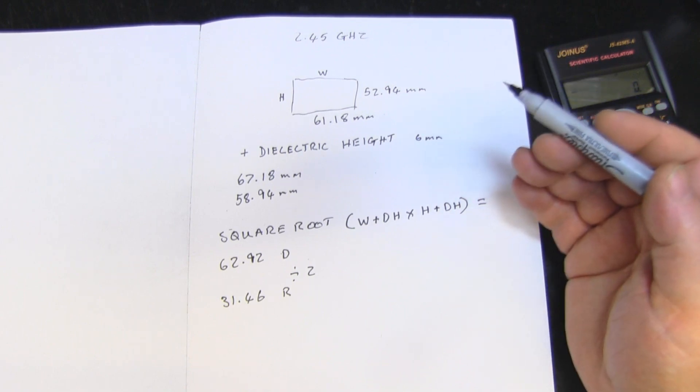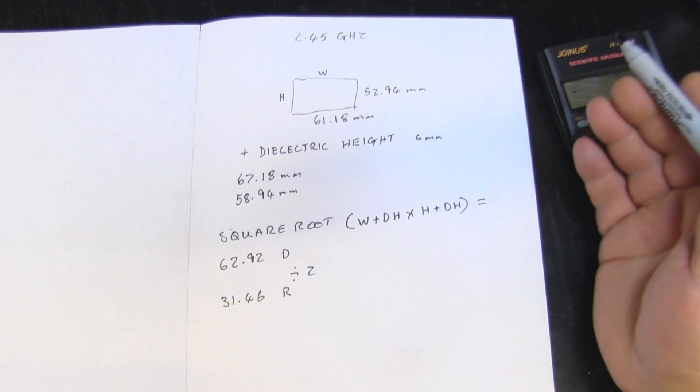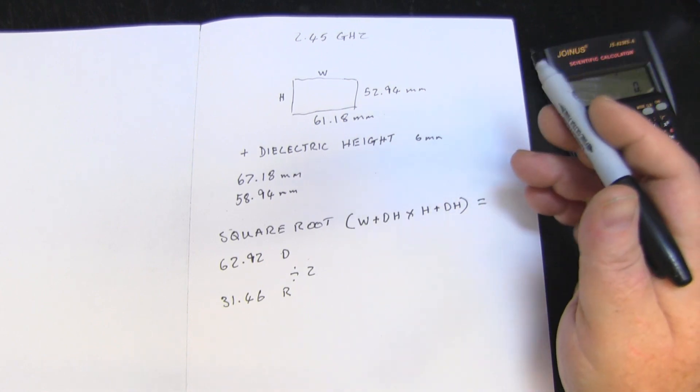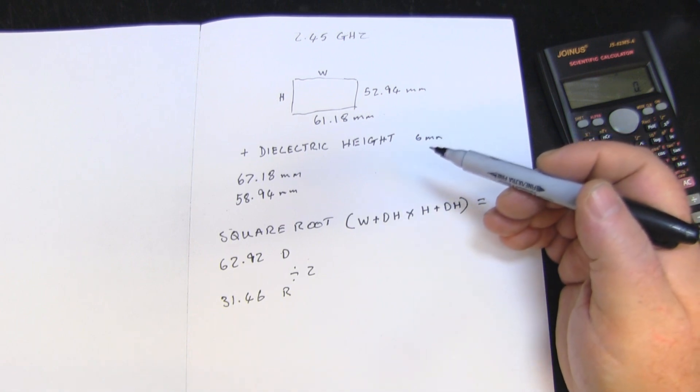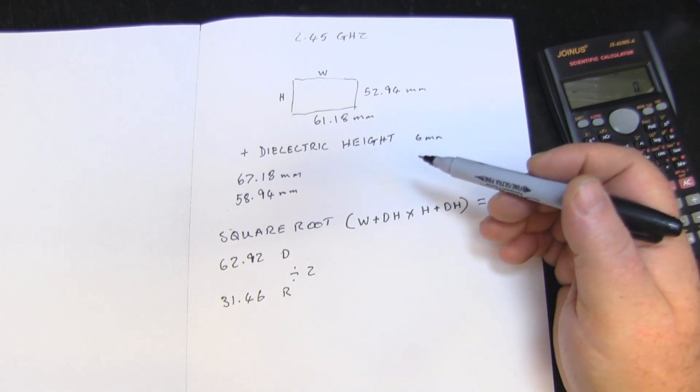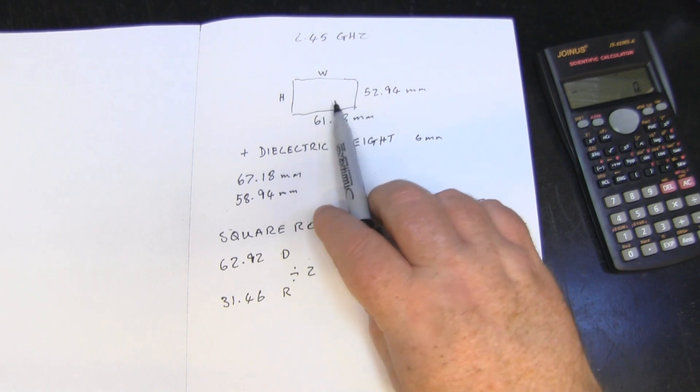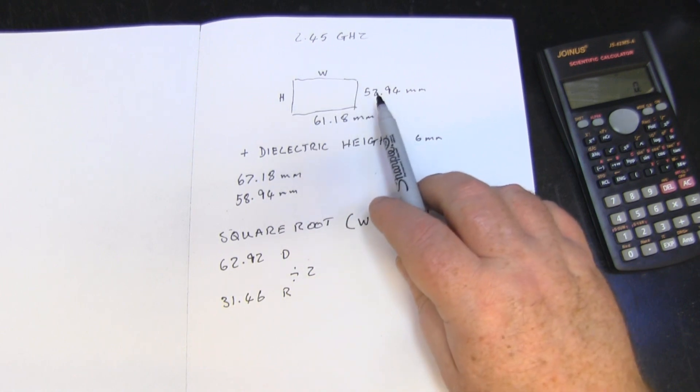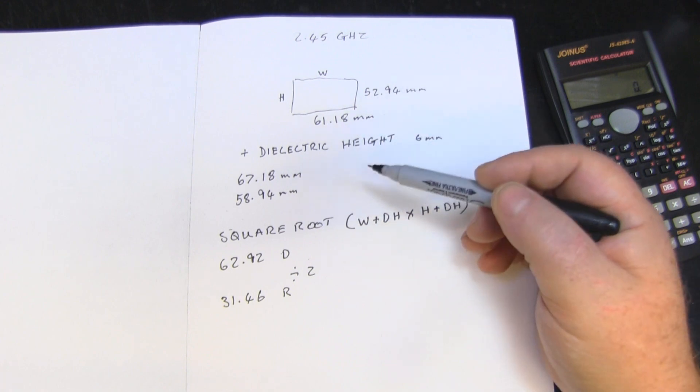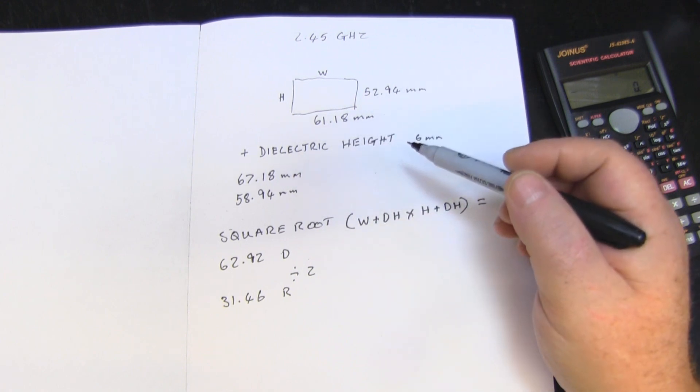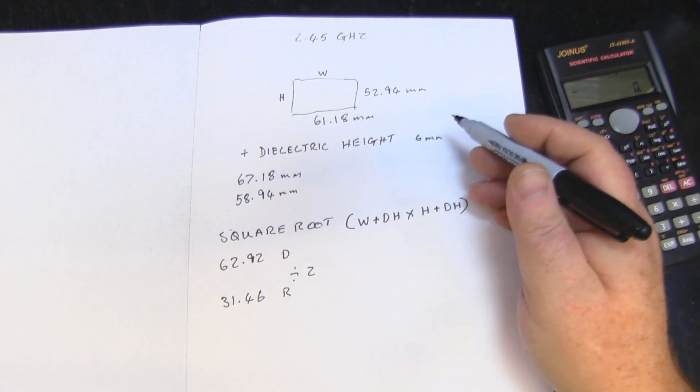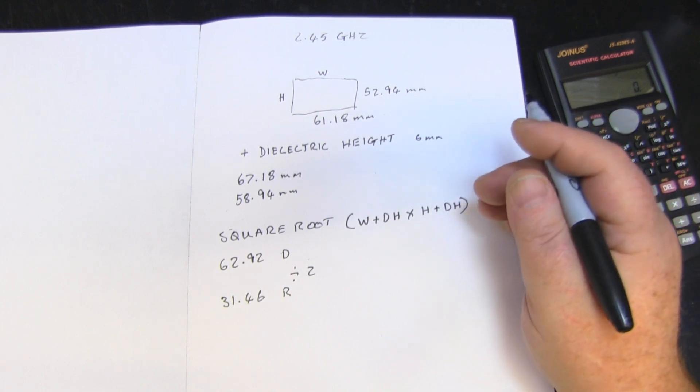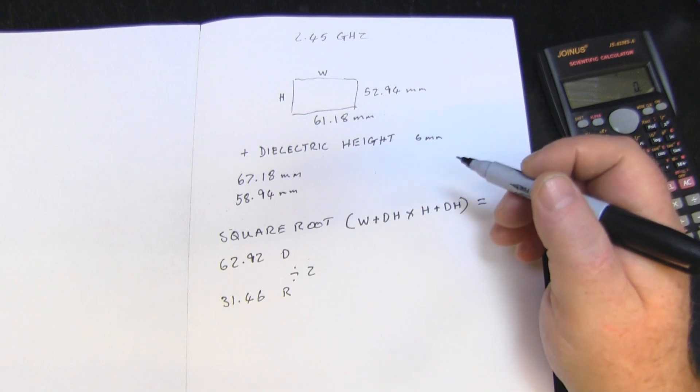This is something I came across on microwaves101.com - a guy posted a formula to convert the measurements for a rectangular patch antenna into a circular patch antenna. Nine times out of ten it's absolutely bang on and doesn't need any further trimming. It definitely gets you in the ballpark.